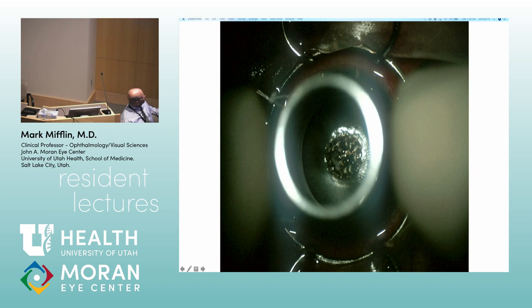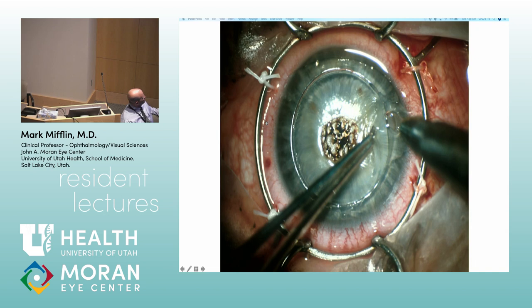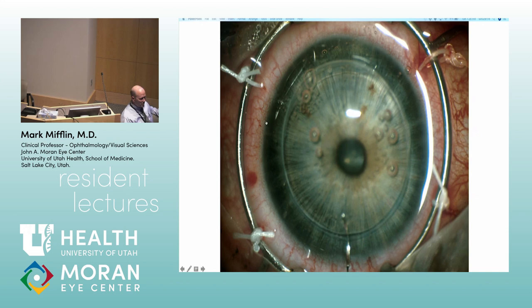Most of the time we use suction trephines. We enter and inflate with Viscoat. One important thing on the cutting is to try not to leave a ledge — the trephine will bevel out just a little bit. If you're not careful to get your blade in the groove already established, you're going to leave a rim. Always hug the outer wall — get your blade in there and push centripetally a little bit.